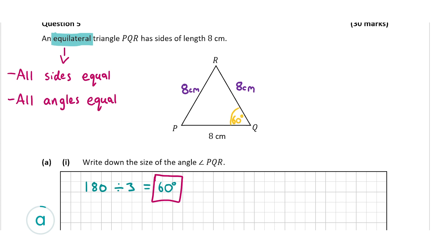Whenever I'm doing a trigonometry question, I always like to write in or draw in the information that I have on the diagram of the triangle. I've already written in that two of the sides are 8 centimetres. We've worked out that the angle PQR is 60 degrees, and as it's equilateral, the other angles are also 60 degrees. So that's the answer for A part 1 — 60 degrees.